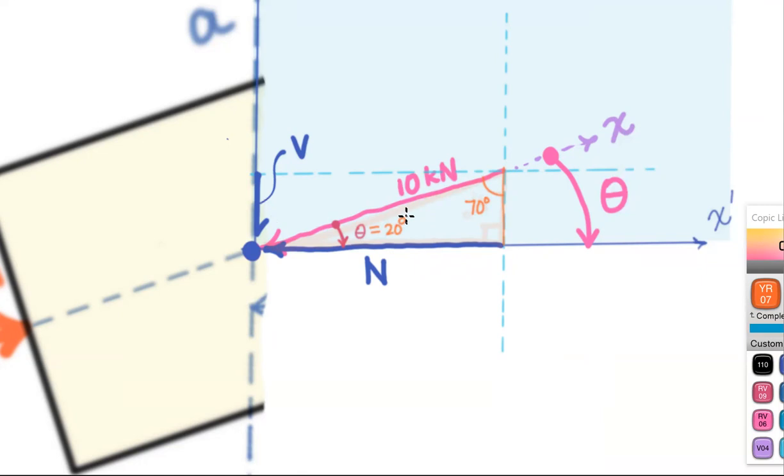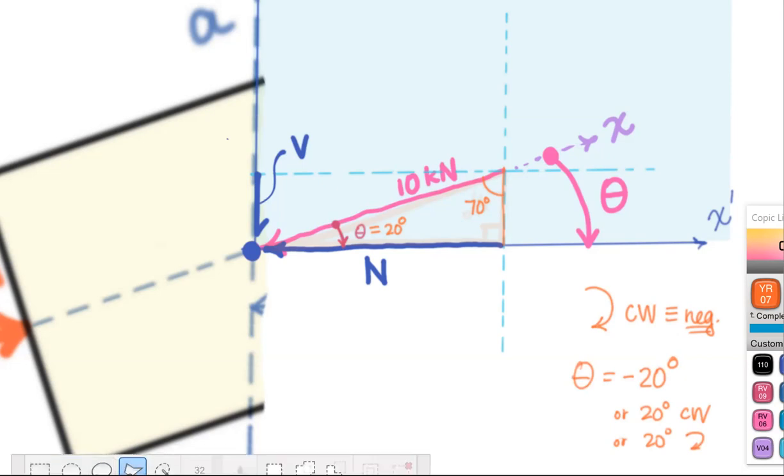And that data does have a sign and our sign convention says that a clockwise rotation like this, we define that as a negative angle. So if you wanted to report this, you'd have to say theta is equal to negative 20 degrees, or 20 degrees clockwise, or 20 degrees with the little clockwise arrow, any of those would be okay.